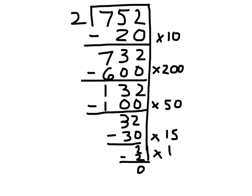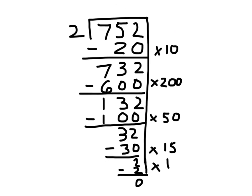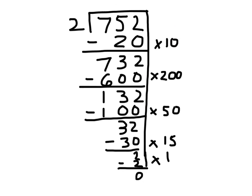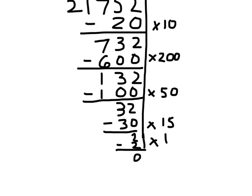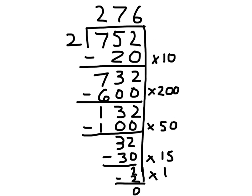My last step now is to add up all the different parts of my quotient. I'm going to add up 10, plus 200, plus 50, plus 15, plus 1. 10 plus 200 is 210. Plus 50 is 260. Plus 15 is 275. Plus 1 is 276. And that is what I'm going to write at the top. Being that I was left with 0 at the very bottom, I don't have a remainder in this problem. And that is how we use the partial quotient method for solving division problems.